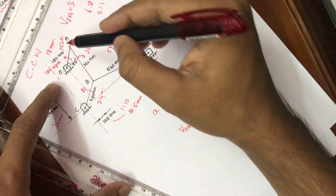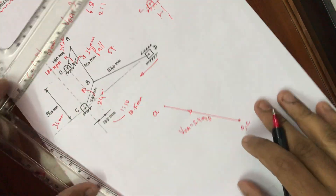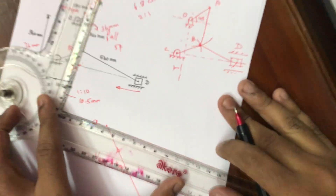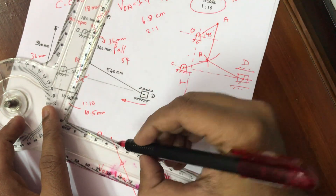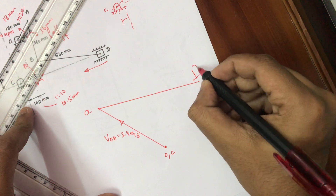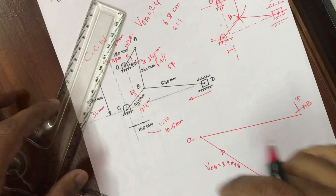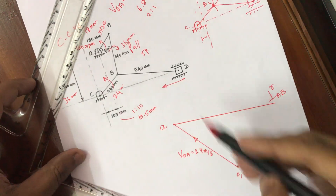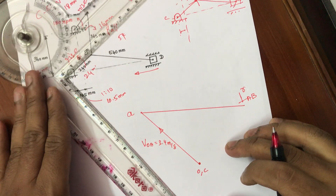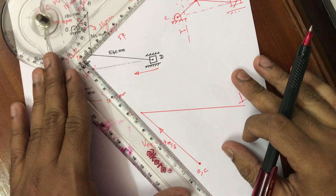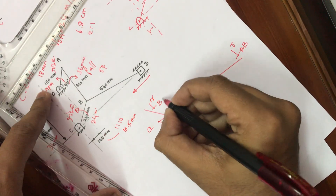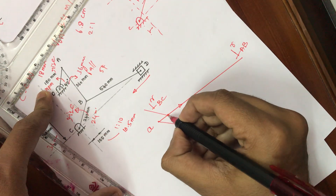Now for link AB: AB is falling towards the right side. We draw an unlimited line perpendicular to AB from point A. For the next link BC, the direction is rising towards the left side — we draw a line perpendicular to BC from point B. The intersecting point of these two perpendicular lines gives us point C on the velocity diagram. So the four points O, A, B, C are now established.